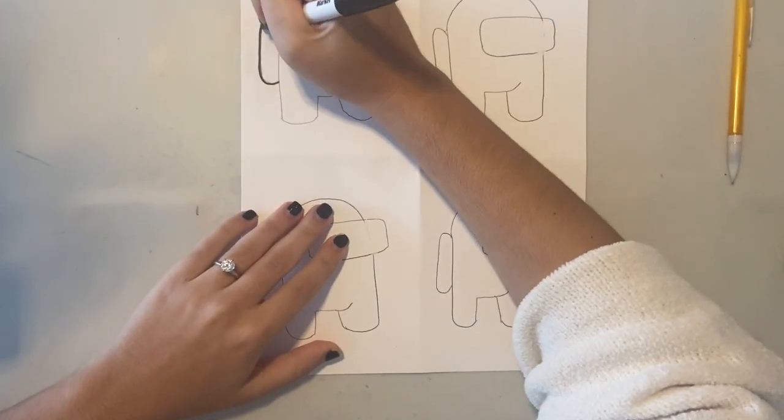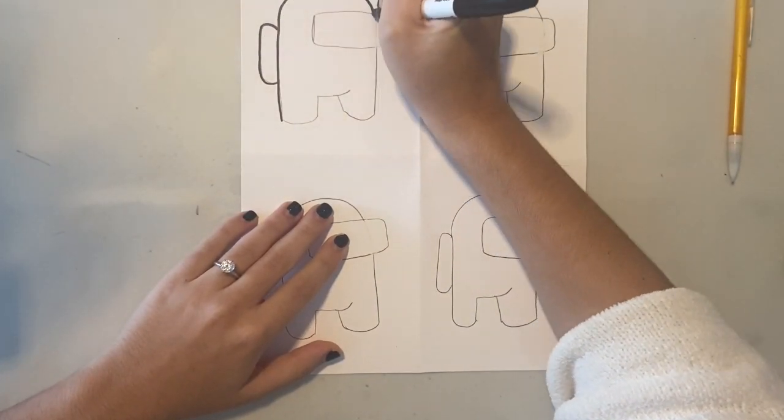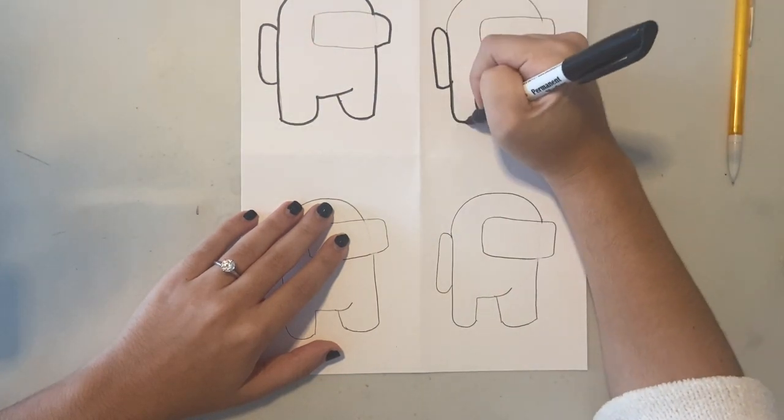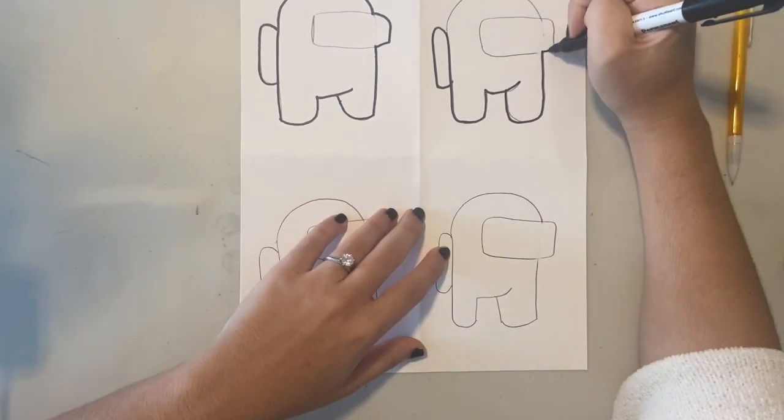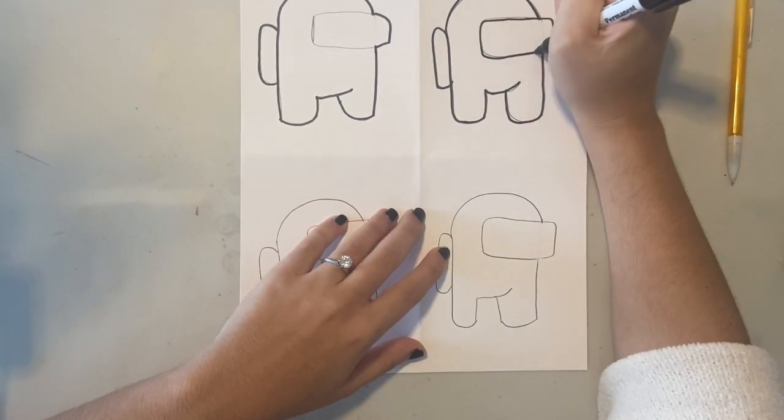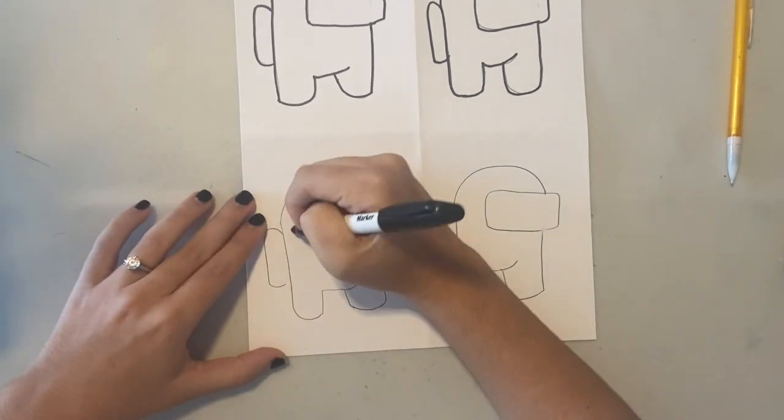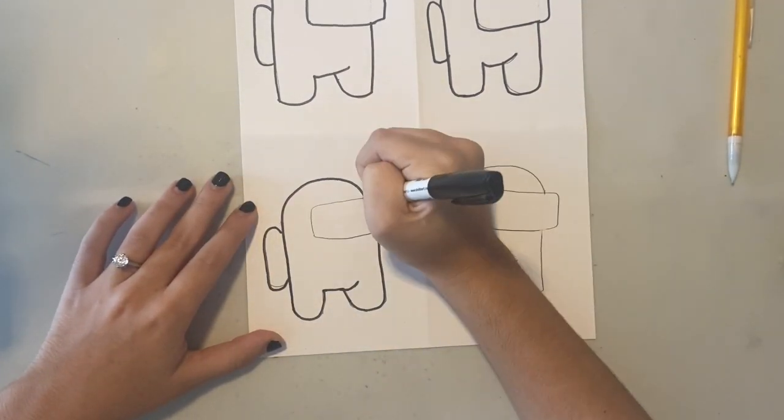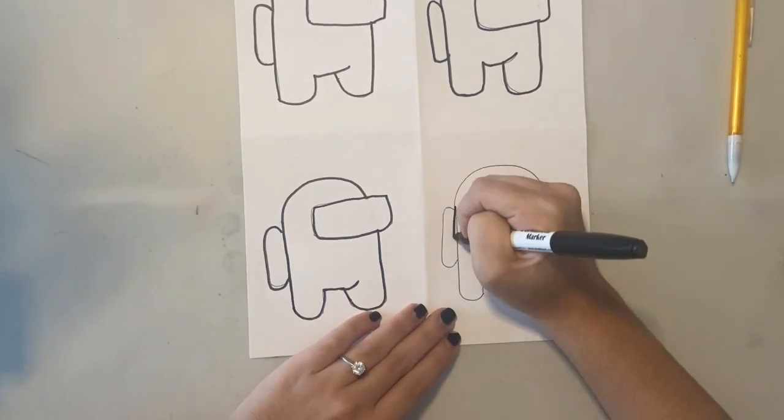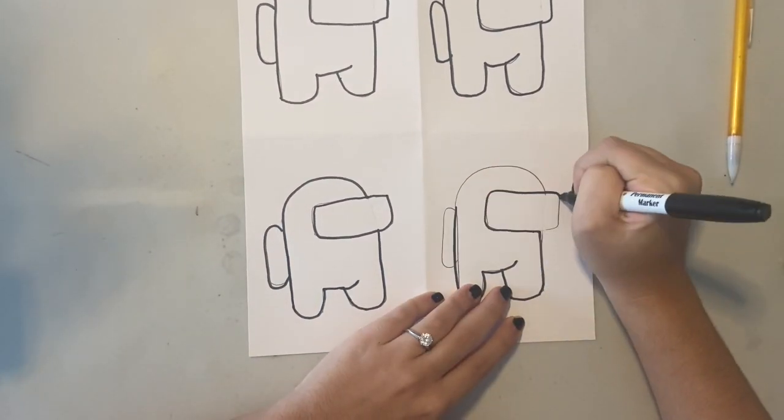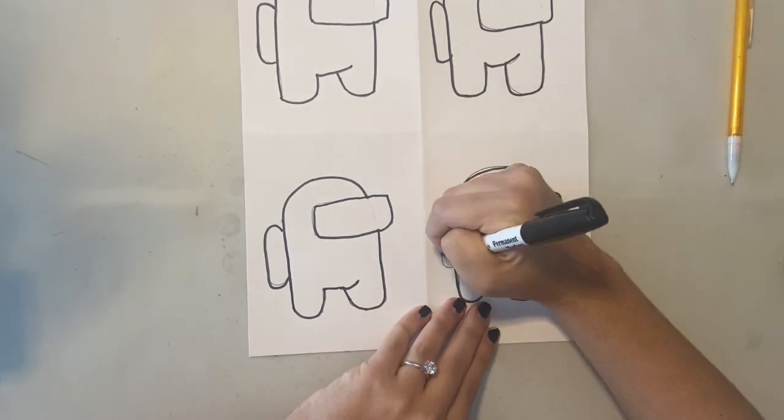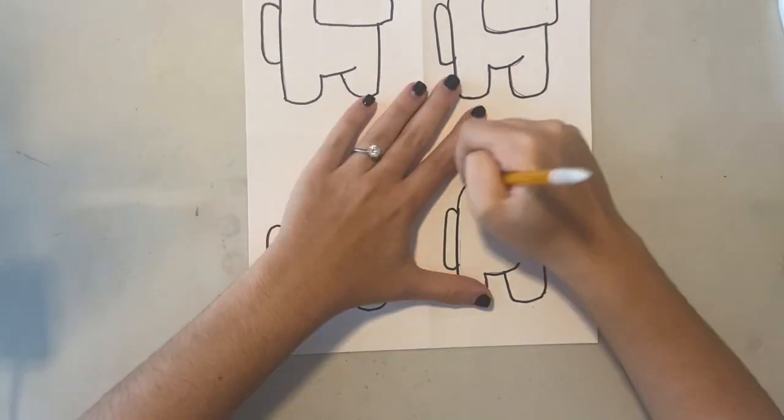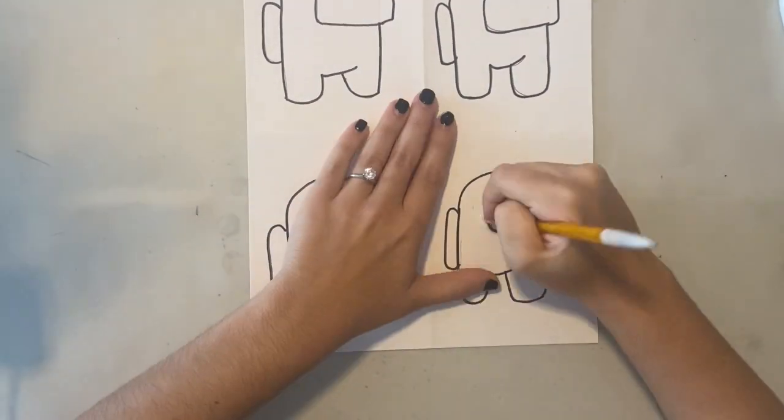Once you are done with your drawings in pencil, take a black marker and trace all of those pencil lines. Don't worry about going over the pencil lines perfectly because you can grab your eraser and erase any of the pencil lines that are still peeking through.